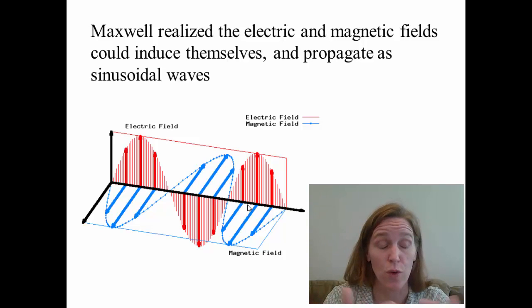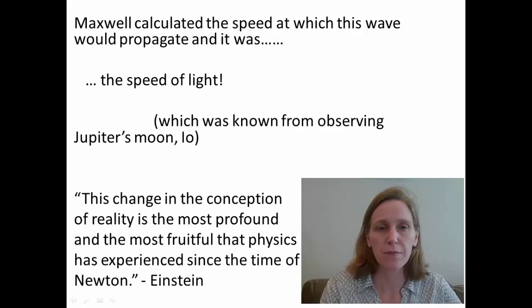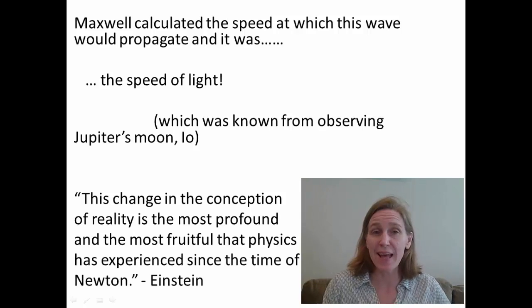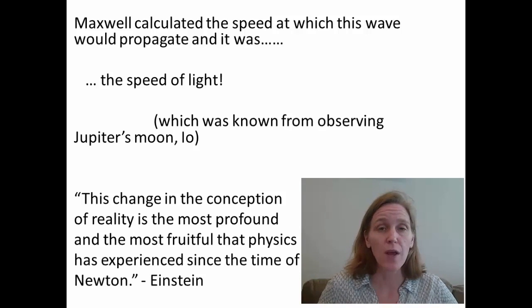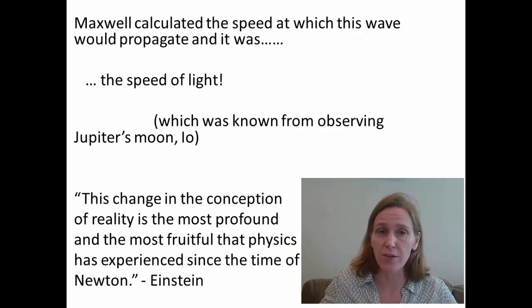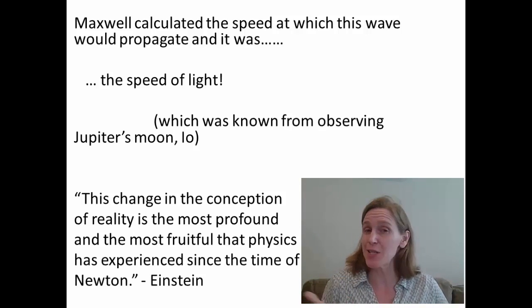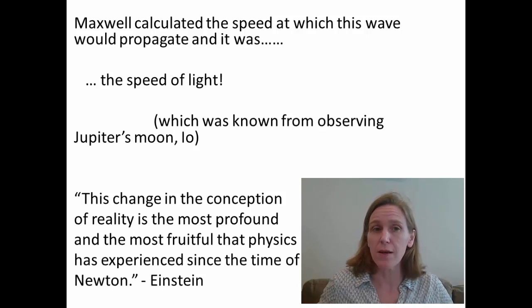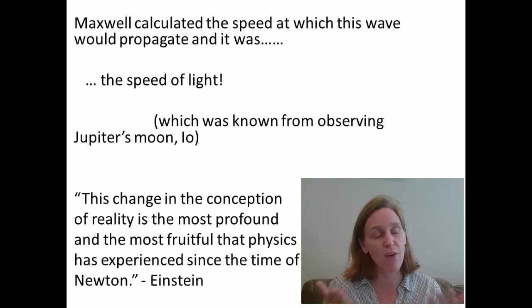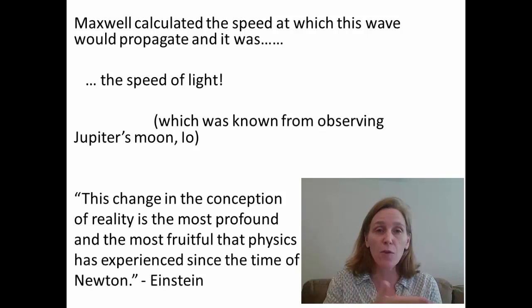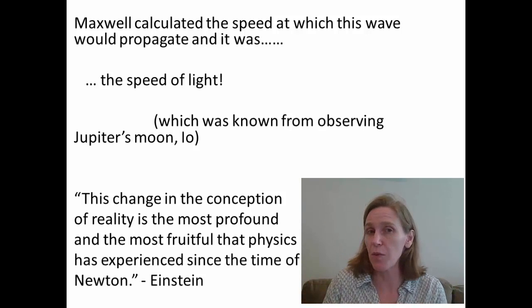And this turned out to be one of the sort of great surprises of his life. It turned out to be exactly the same as the speed of light. So scientists by this time had been able to calculate how fast light moved. They were able to do this by observing astronomical bodies and then calculating how fast the light must have taken to reach Earth. So they knew what the speed of light was. The thing was, they really didn't know what light was up until this moment. So Maxwell finally had an answer to the question. What was light? For him, it was the propagation of these electromagnetic waves.